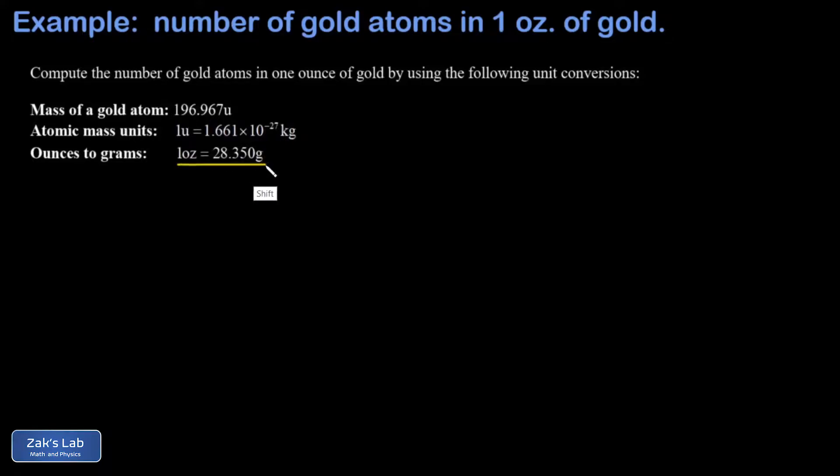One ounce can be converted to grams as 28.350 grams. I'm given the value of an atomic mass unit, roughly speaking that's about the mass of a proton, and then I have the number of atomic mass units in a single atom of gold.